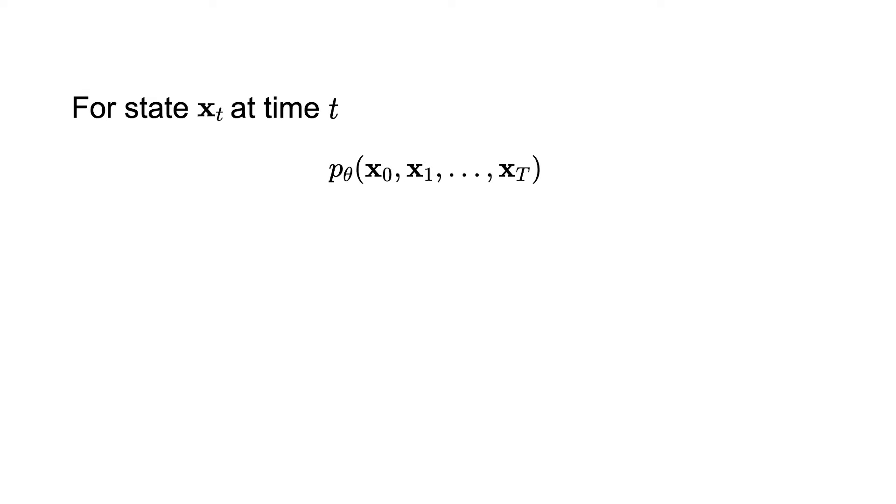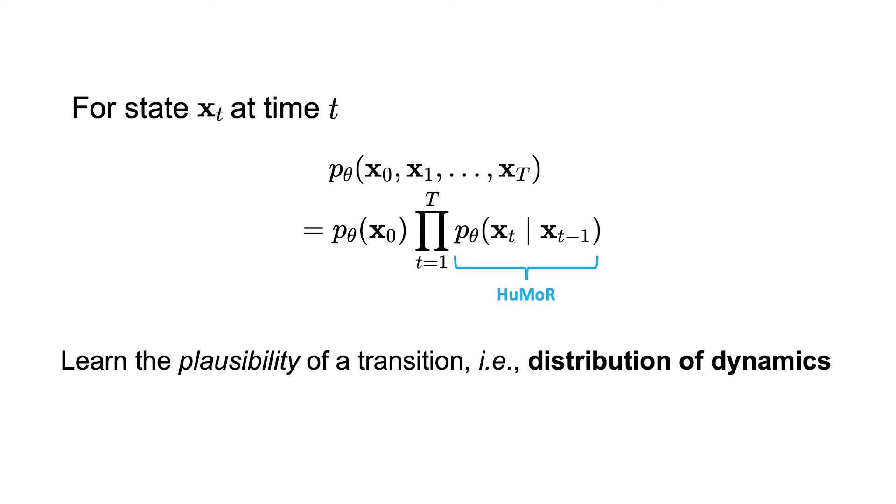To model human motion, we're interested in the likelihood of a sequence of pose states. Instead of modeling this directly, we factorize it into a sequence of transitions. Then humor must learn the plausibility of a transition between two poses, or in other words, the distribution of how a pose will change in a single time step.